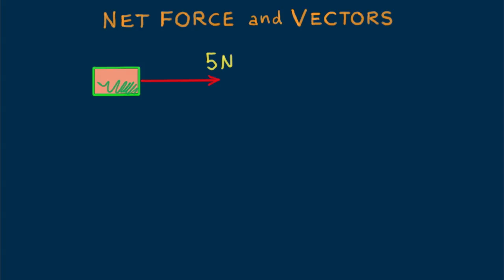This red arrow drawn to scale is a vector. A vector is a pictorial arrow that shows both magnitude, how much, and direction, which way. The 5 Newton force can produce a pickup in speed of the box. Suppose we exert a second identical force on the box. The pair of 5 Newton forces will double the gain in speed.